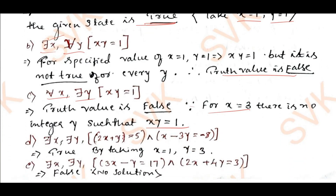Fourth: there exist x, there exist y such that 2x + y = 5 and x − 3y = −8. This is true. Solving these two equations gives x = 1 and y = 3, which satisfies both equations. Therefore there exists a solution, and the given statement is true.